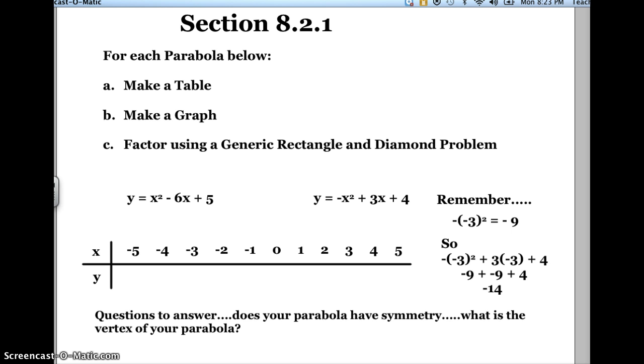Look at the list of parabolas. I just want you to look at two different parabolas from that list. The two parabolas I want you to look at are y equals x squared minus 6x plus 5, and y equals negative x squared plus 3x plus 4.